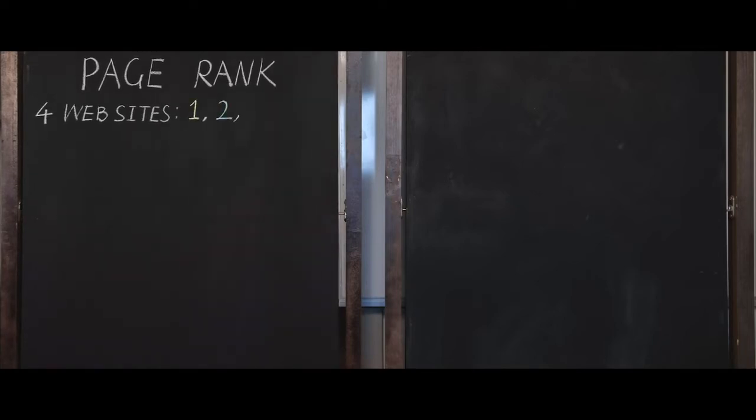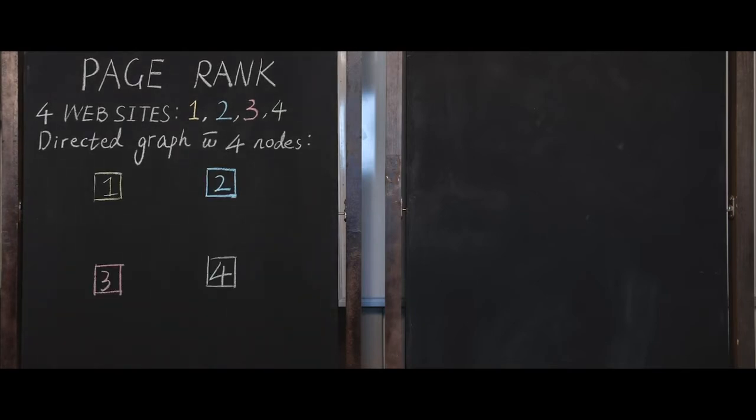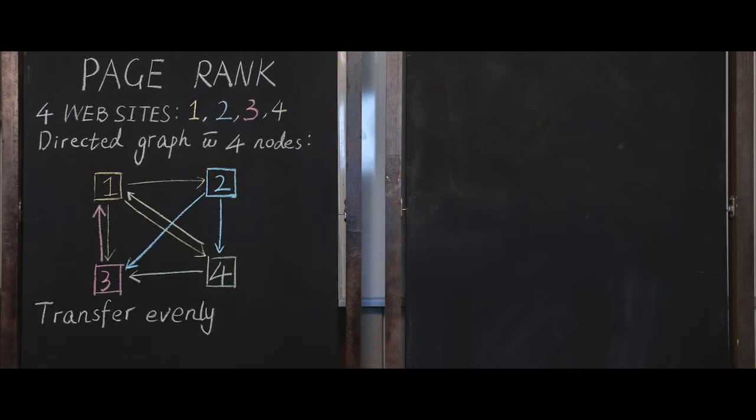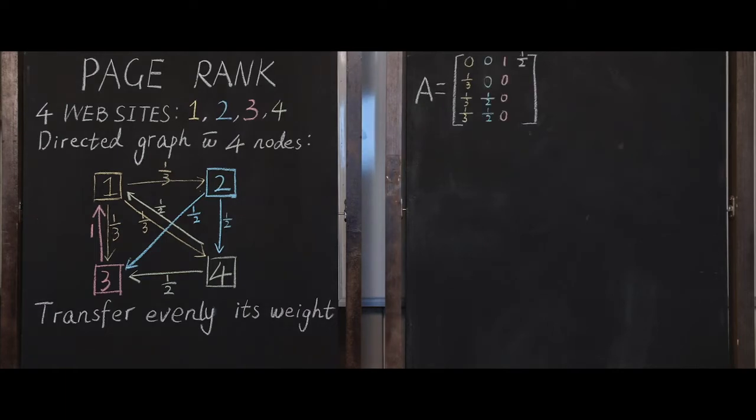We have four websites, for example, and they're turned into a directed graph with four nodes. The directed edge from A to B means that website A references website B. Each page transfers evenly its weight. Node 1 has three outgoing edges, so it will pass on one third of its importance. We can then denote A, the transition matrix of the graph.